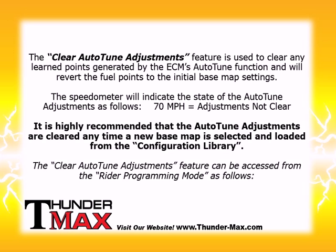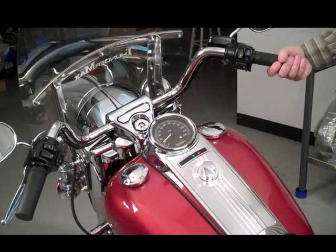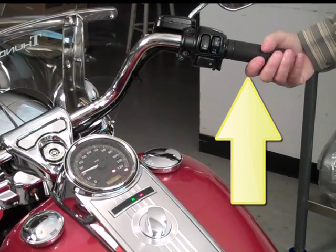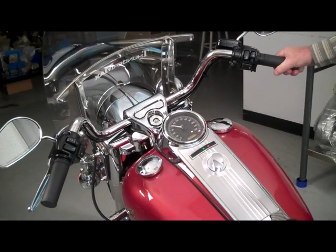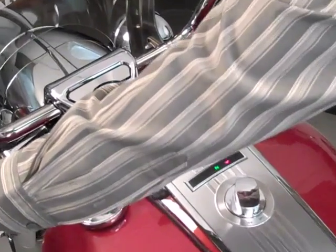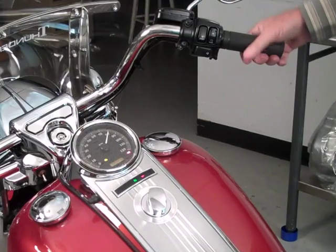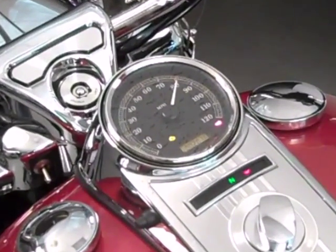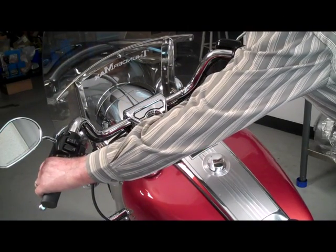The clear auto-tune adjustments feature can be accessed from the Rider Programming Mode as follows. While in Rider Programming Mode, twist the throttle to achieve a speedometer reading of 40 mph. Fully pull and release the clutch to activate your selection. The speedometer will display 70 mph, the current state of the offsets. Twist the throttle one time to indicate 80 mph. This selection will clear the offsets.